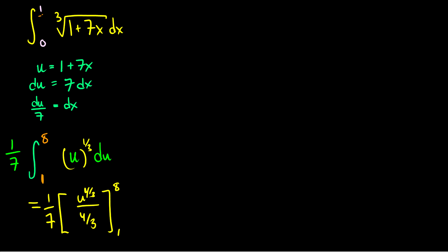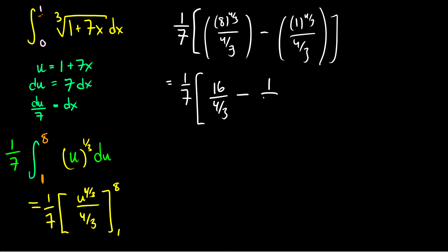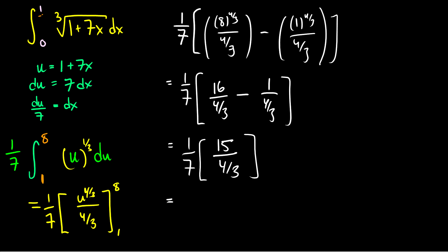So this is 1/7 times: plug in 8 for u — that's 8 to the 4/3 over 4/3 — minus plug in 1 — that's 1 to the 4/3 over 4/3. Now we simplify. 8 to the 4/3 is the same as 2 to the 4, which is 16. And 1 to the 4/3 is just 1. So we have 1/7 times (16 over 4/3 minus 1 over 4/3), which is 15 over 4/3. Then 1 times 15 is 15, and 7 times 4/3 is 28/3, so the final answer simplifies to 45/28.